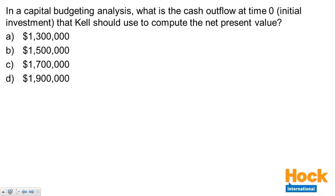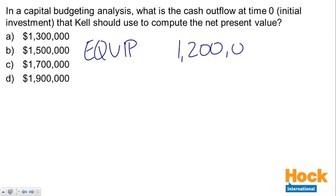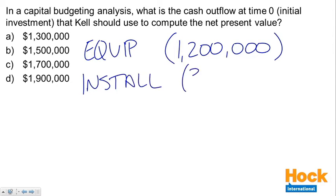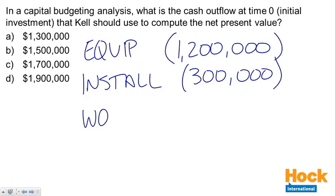We've got just three things here. The first is the cost of the equipment itself — that's $1,200,000, a cash outflow. We're also going to pay for installation: $300,000, also a cash outflow. So we're up to $1,500,000 cash outflow. But we also have the working capital — that increase in working capital of $400,000 — that is going to be treated as a cash outflow.